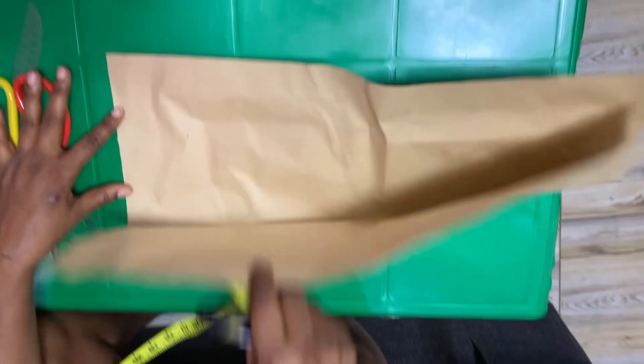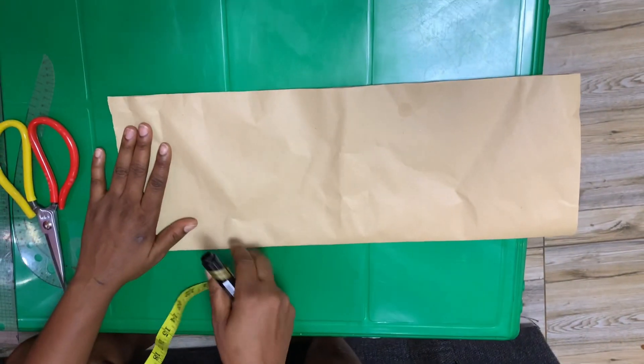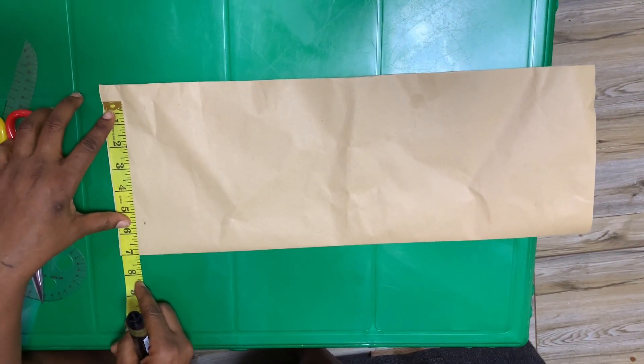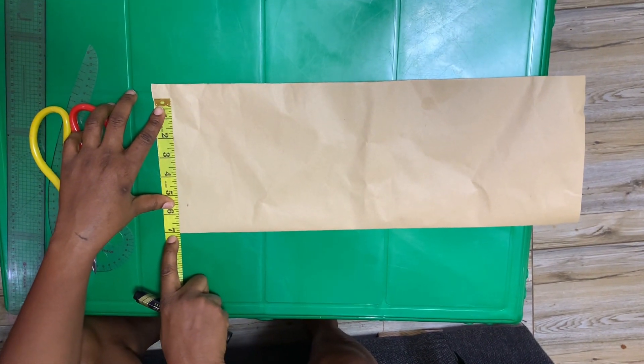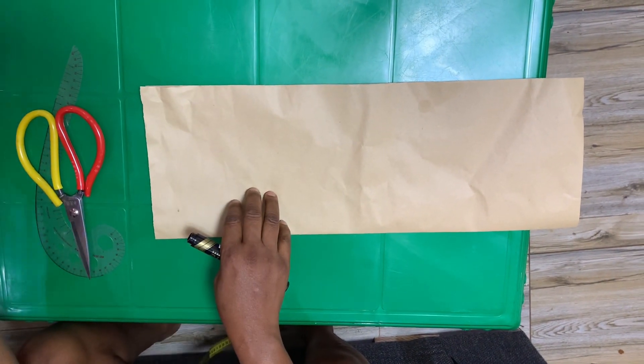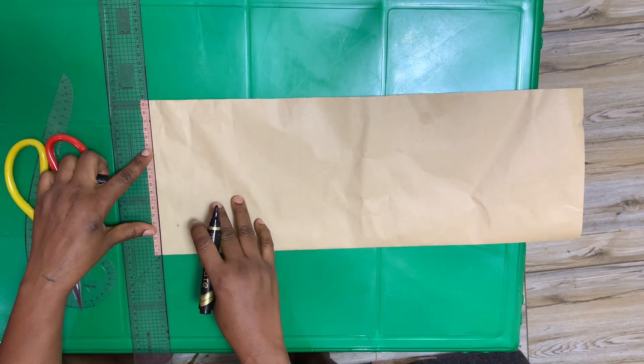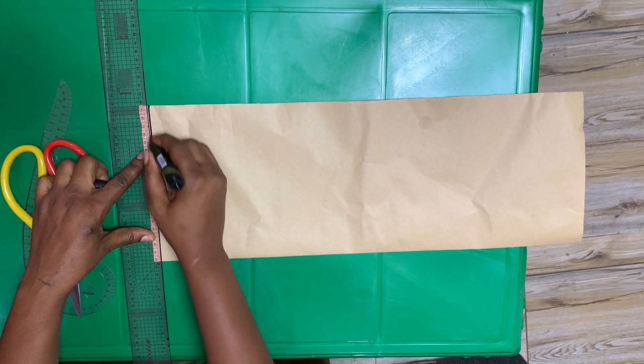Let's start. This is the pattern paper we will use. The pattern paper is 16 inches, but as I fold it, it will be 8 inches because the measurement I will use for my armhole is 7 inches. So I have an extra 1 inch as allowance.